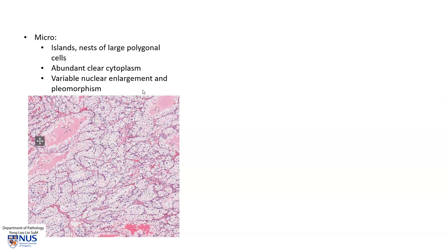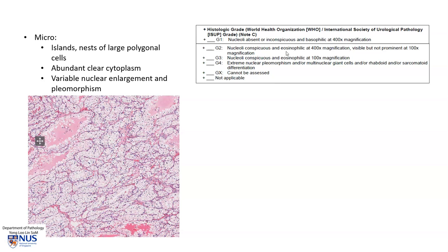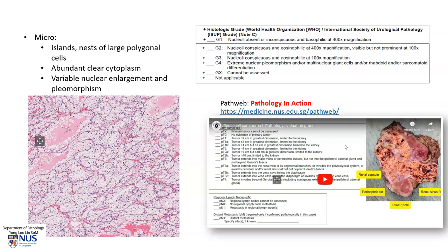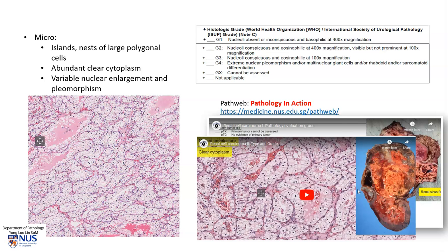There is variable nuclear enlargement and pleomorphism. Grading of these tumors is based on the visibility of nucleoli at different levels of magnification. If you would like to learn more about how we assess the stage and the grade of these tumors, you can look at our web resource PathWeb, in the Pathology in Action pages — the link to PathWeb is in the video description. Here is the video on staging and here is the video on grading in PathWeb.